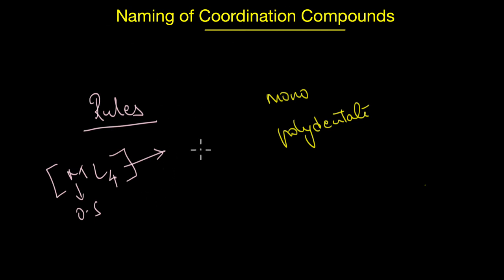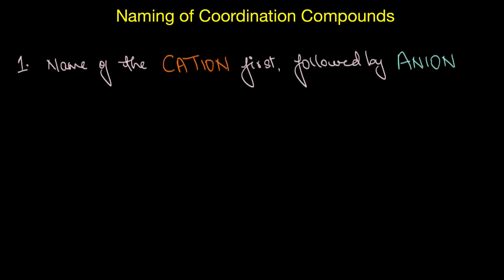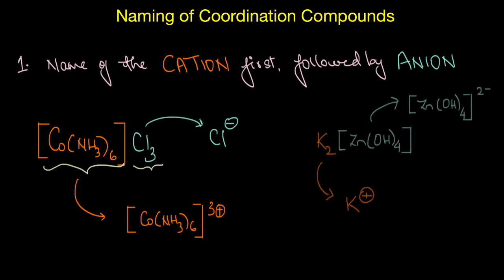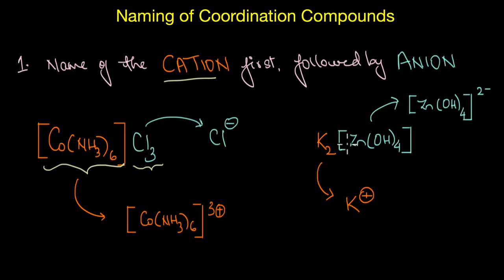The first rule is that we name the cation first, followed by the name of the anion. For example, in [Co(NH₃)₆]Cl₃, Cl₃ is the anionic part and [Co(NH₃)₆]³⁺ is the cationic part, so we name the cationic coordination entity first. The coordination entity need not always be the cation — for example, the cation can be a counterion like K⁺ while the coordination entity is anionic. In either case, we always name the cationic part first, then the anionic part.